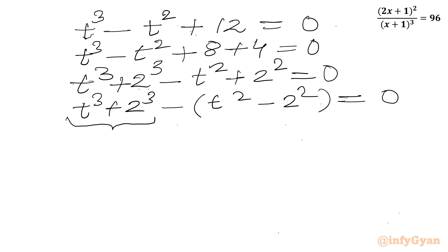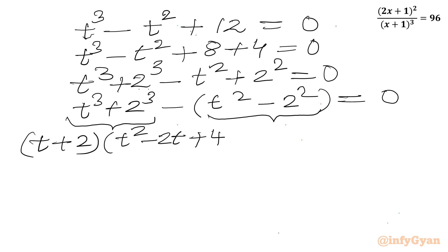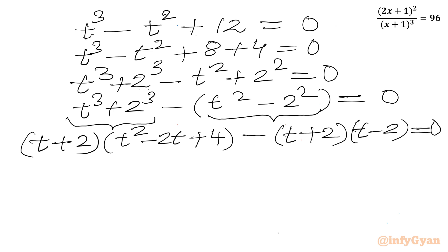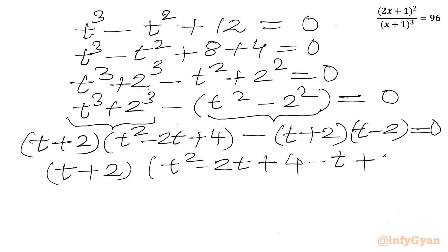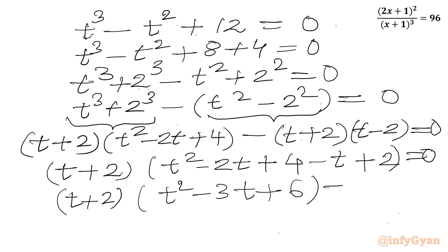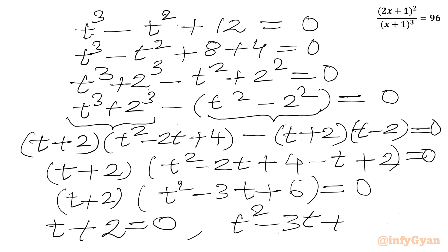Now we can use two identities — the sum of cubes formula on t³ + 2³, and the difference of two squares on t² − 2². This gives (t + 2)(t² − 2t + 4) − (t + 2)(t − 2) = 0. Factoring out (t + 2): (t + 2)(t² − 2t + 4 − t + 2) = 0, which simplifies to (t + 2)(t² − 3t + 6) = 0.